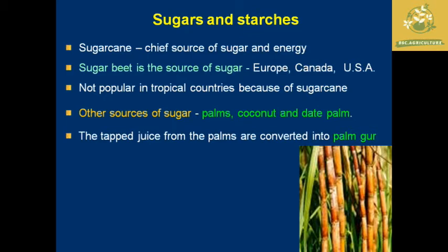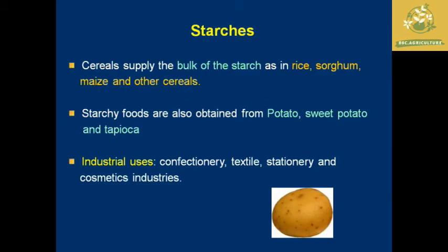Starch is mainly provided by cereals — rice, sorghum, maize, and other cereals are major sources. Other starchy foods include potatoes, sweet potato, and tapioca. Starch-containing crops also have industrial uses in confectionery, textile, stationery, and cosmetic industries.